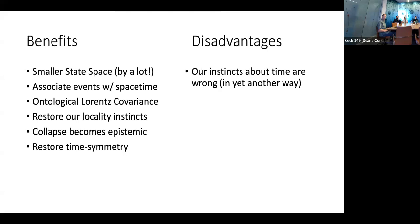Why would we want to do this? Obviously our state space would shrink by — you can't even comprehend how much smaller the state space would be by the time you're talking about any reasonable number of qubits. The events aren't living in Hilbert space; they're in spacetime. I have some events on this qubit wire, which is some path in spacetime, and as long as all those paths are slower than or at light speed, you're back to hoping to get Lorentz covariance back to your ontology. Our instincts about locality — that things should only interact when they physically come together — could be restored.